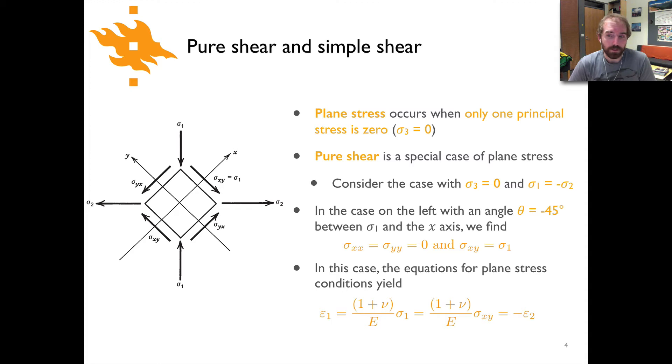So in this case on the left side with an angle theta of 45 degrees, that's the angle between the principal stress axis and the coordinate system. We see that sigma xx is equal to sigma yy is equal to zero, that comes from these normal stresses offsetting one another. And then our sigma xy in this case is going to be equal to sigma one, and you can go through and demonstrate that for yourself if you'd like. I'm not going to do that here.